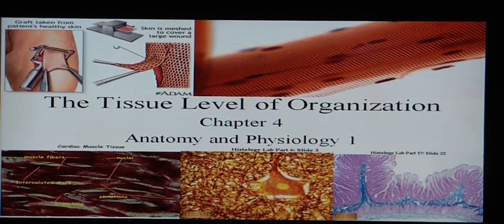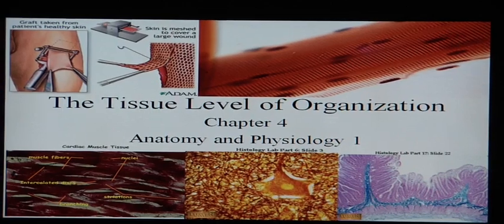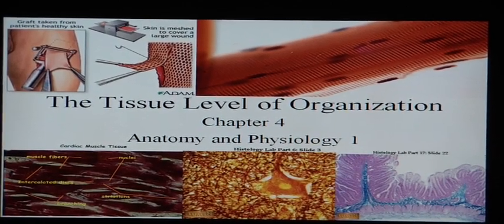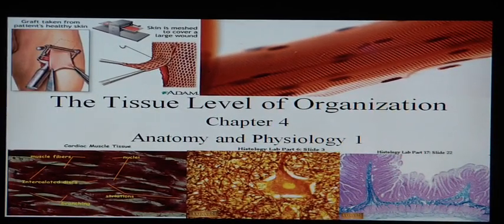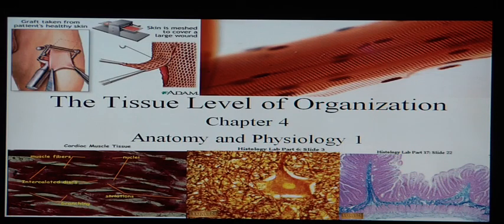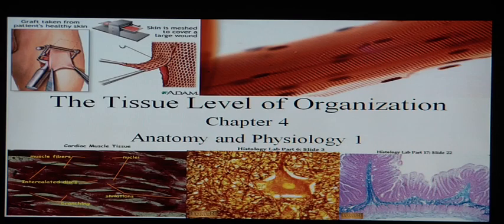Chapter four: the tissue level of organization. In chapter one we talked about the definition of anatomy and physiology, anatomical terms, and basic points of cells. In chapter two we went up to atoms, molecules, and bonds. Chapter three covered cells and cell parts. When we combine cells together, we get tissues. So chapter four is going to cover the tissues, working our way up through the hierarchy of life.